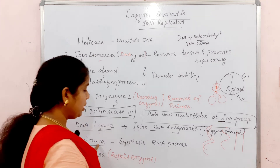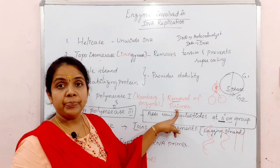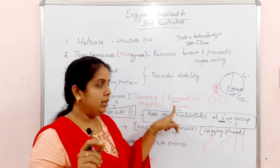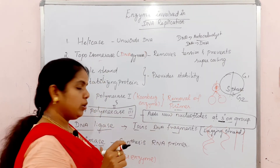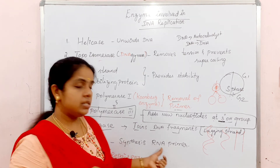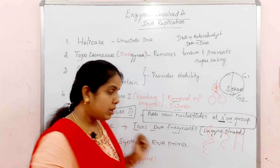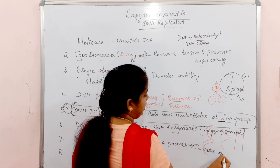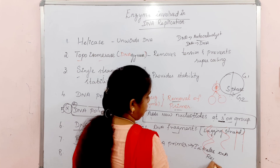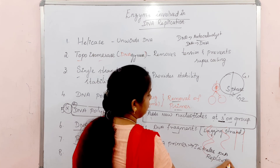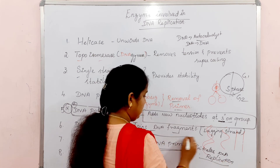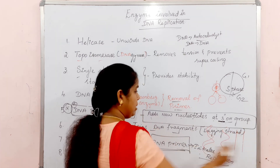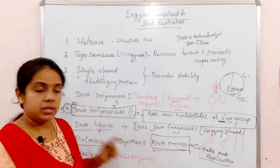The next enzyme is Primase enzyme. Primase synthesizes the RNA primer. The RNA primer initiates DNA replication. Replication is initiated by the RNA primer, which is then elongated and extended by DNA Polymerase 3 enzyme.